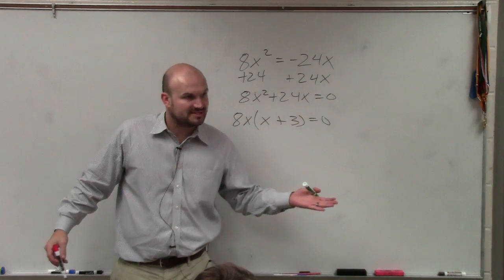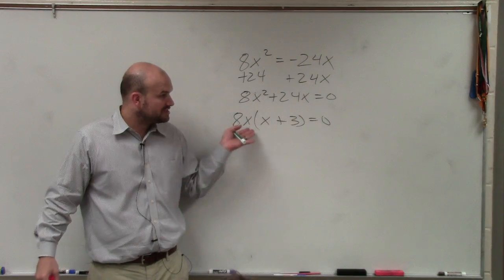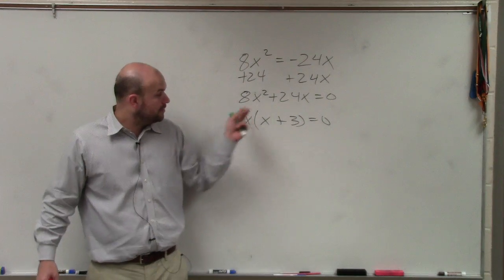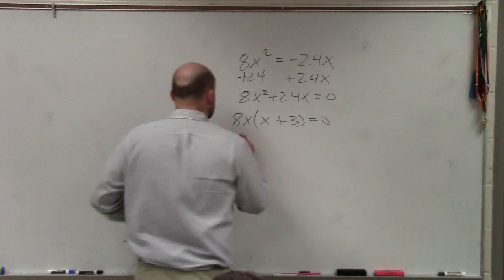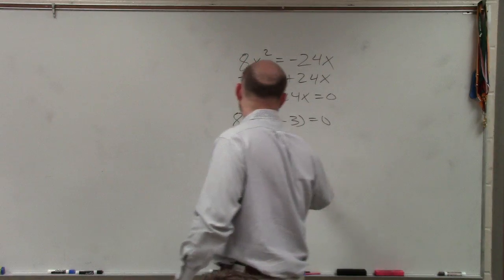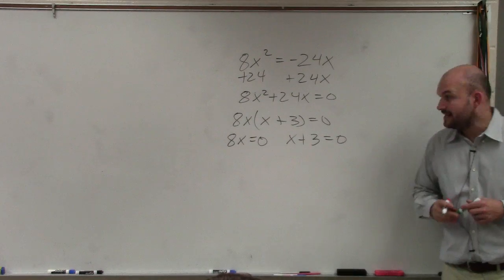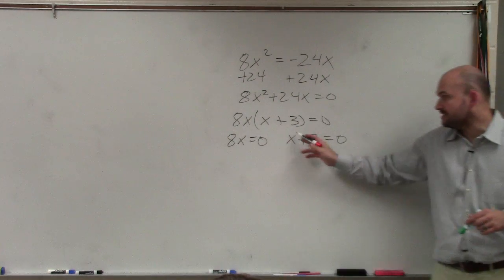And what the zero product property states is when you have the product of two expressions equal to 0, that's why having it equal to 0 is so important. When you have it equal to 0, you can set them both equal to 0. So now, we break it apart. We set each expression equal to 0.